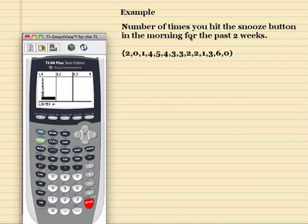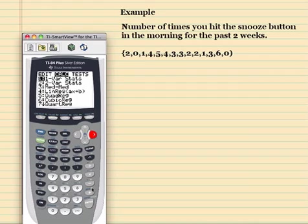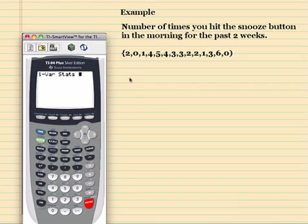So if you look at our data, this is the number of times you hit the snooze button in the morning for the past two weeks. So I'm just going to second quit out of that. You don't necessarily have to do that. But let's go ahead and do our same thing that we found, the median, the mean, the five number summary. There is no calculator function that will find the IQR. You have to use the formula.